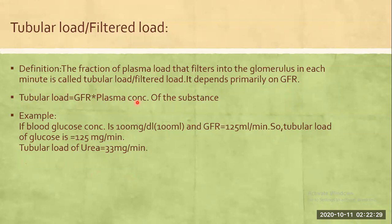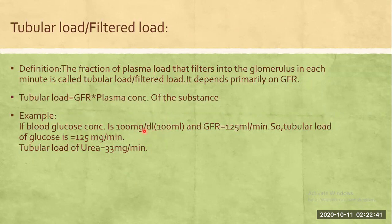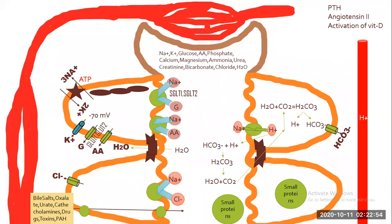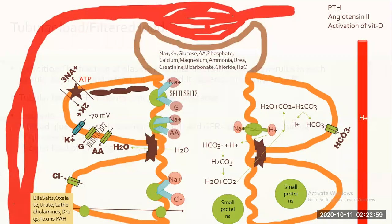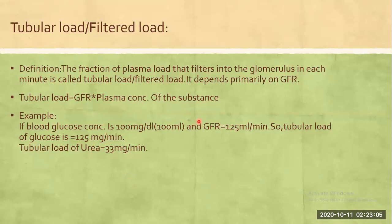For example, if GFR is 125 ml per minute and the plasma concentration of the substance is 100 mg per deciliter — that is 100 mg per 100 ml — then the glucose tubular load can be calculated from GFR times plasma concentration.